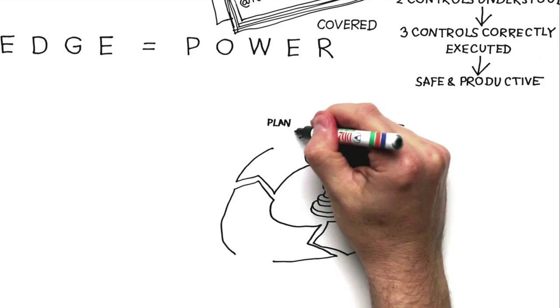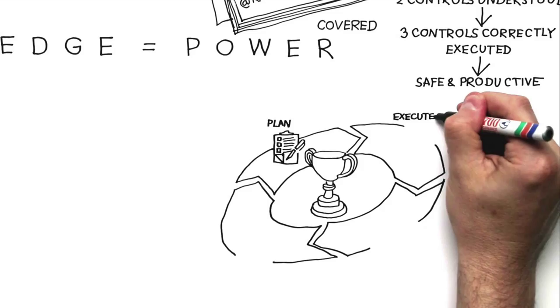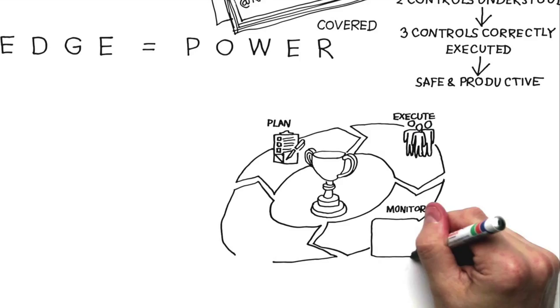If you implement ORM correctly, the actions, controls and improvements that are identified in this process flow directly into the relevant parts of the site's management system, making it a central part of how we operate on site.